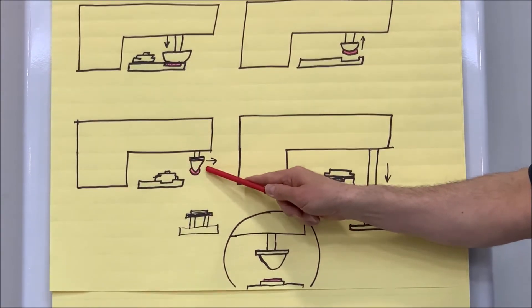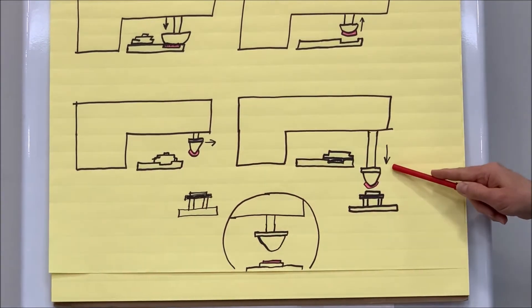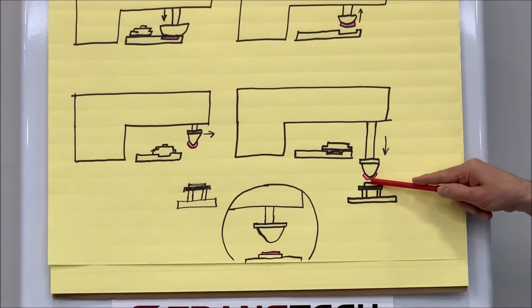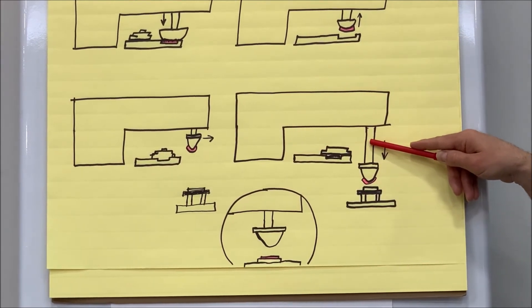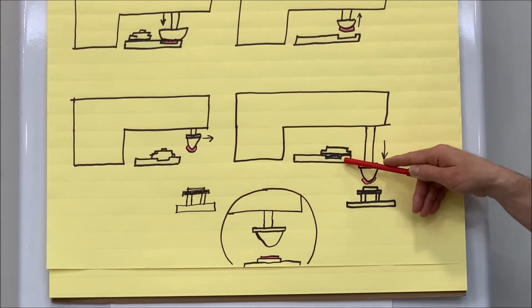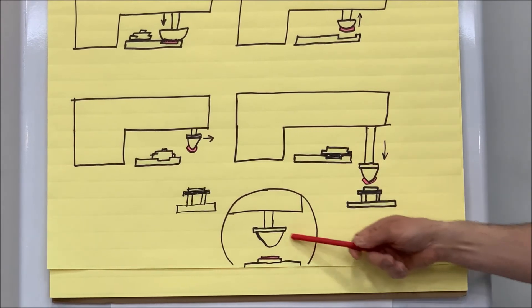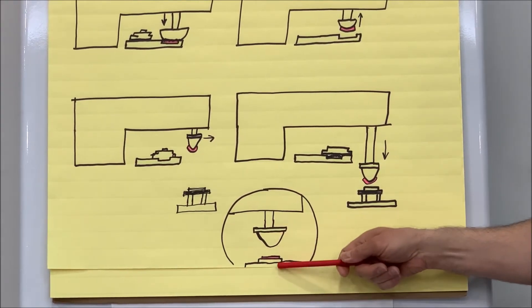And as the pad comes forward to print on our part, we have a complete transfer with the amount of time or the speed of the machine, together with the depth of our plate, and how much thinner we added to the viscosity, so that we can get a full release.